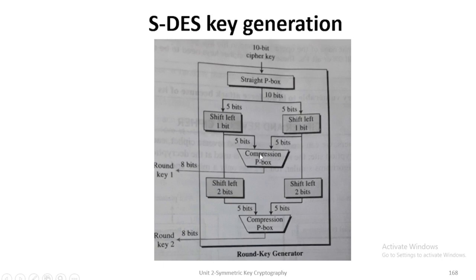After that, that will be combined to compression P-box. The input of compression P-box is 10-bit and the output of compression P-box is 8-bit. The first output will be taken as sub key k1.